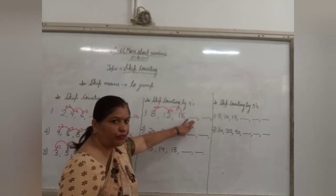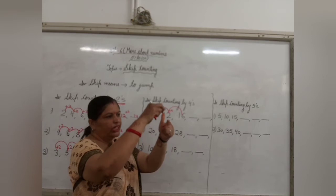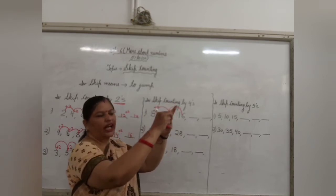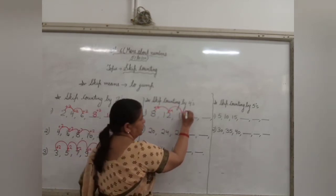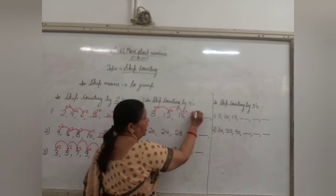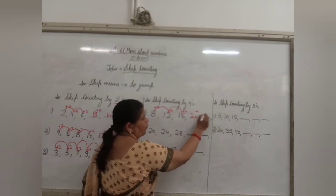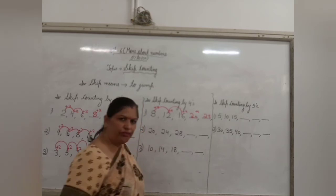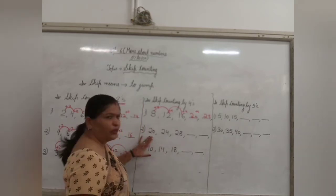you have to jump to the 4th number. So 17, 18, 19 and 20. 4 numbers are there. So 16 plus 4 will be 20. And after 20 plus 4, that will be 24.